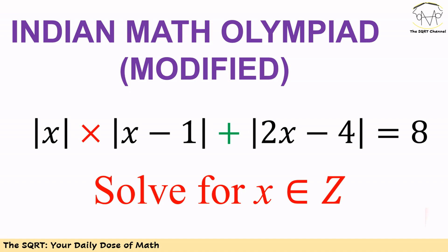Hello everyone. In this video we are going to talk about a problem similar to one from the Indian Math Olympiad. In this problem we have |x| · |x - 1| + |2x - 4|, and this equation should be equal to 8.